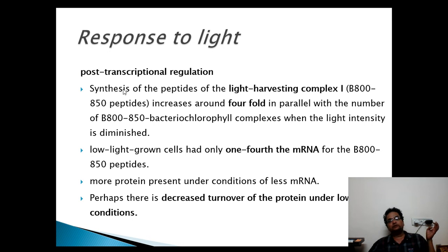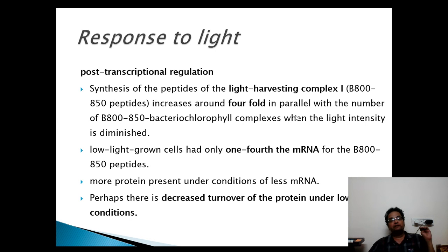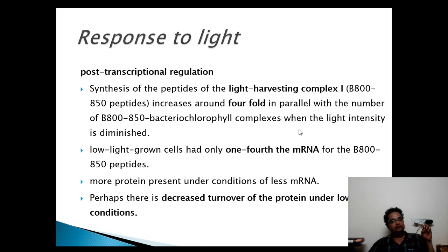There is also post-transcriptional regulation. The synthesis of peptides of light harvesting complex one increases around fourfold in parallel with the number of B800-B850 bacteriochlorophyll complexes when light intensity is diminished. So when low light intensities are present, there is high synthesis of these light harvesting pigments.